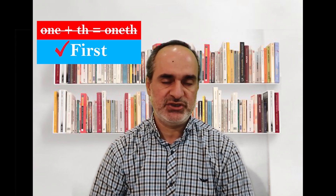First exception: for one, you can't say 'oneth' — it's wrong. You have to say 'first.' For two, you have to say 'second.' For three, you have to say 'third.' And for five, you have to say 'fifth.'